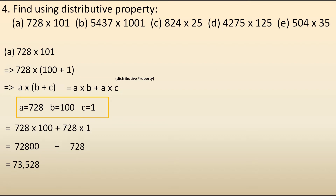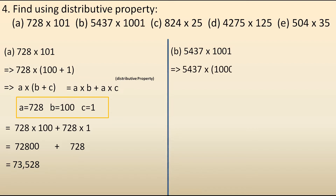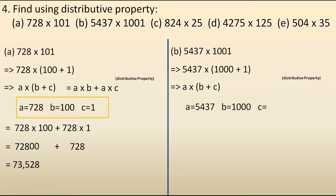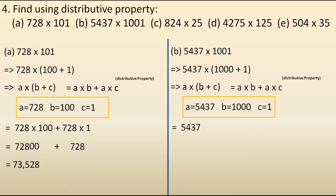Now let's move to the second: 5,437 into 1,001. Here we will split 1,001 as 1,000 plus 1. Distributive property: A into (B plus C). Comparing, A is 5,437, B is 1,000, and C is 1. Putting these values in A into B plus A into C, it becomes 5,437 into 1,000 plus 5,437 into 1.